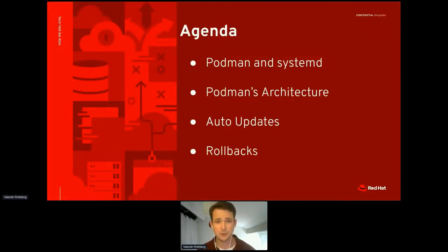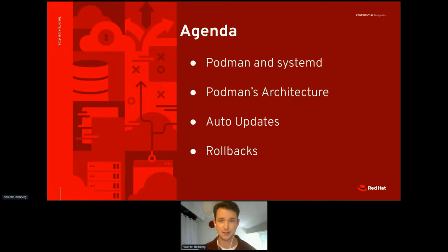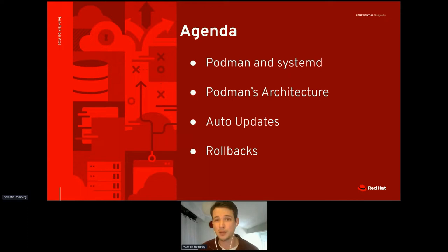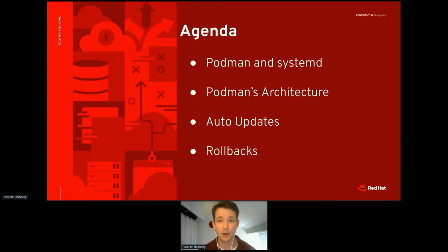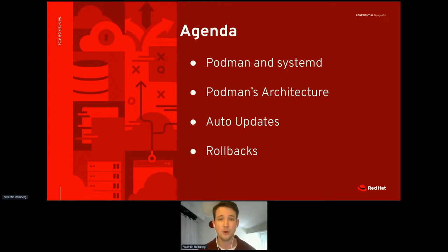The agenda: first we start with Podman and systemd — how we can run systemd inside Podman and how we can run Podman inside systemd services. This is the base requirement for what we're doing on the edge. Then I want to elaborate on Podman's architecture, which is important to understand why Podman integrates well with systemd. Finally, we'll talk about auto updates — conceptually and how we implemented them — and since Podman 3.4, we also support simple rollbacks.